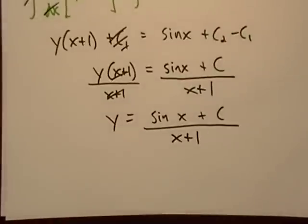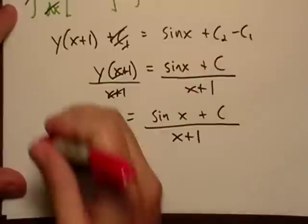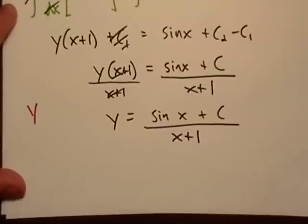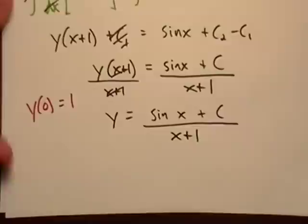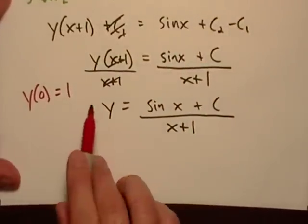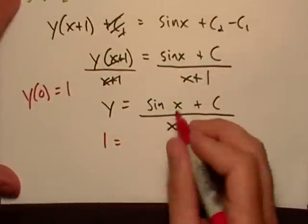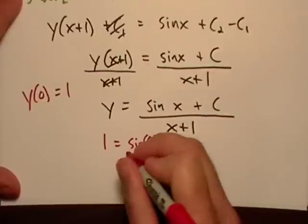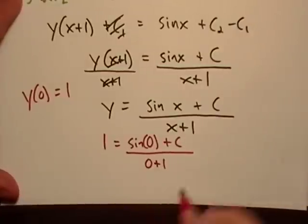Now let's pretend for just a minute. Let's just say that y of zero is equal to one. I don't know, I just made that up. Let's see if it works. So if that was true, then one would be equal to sine of zero plus c over zero plus one.